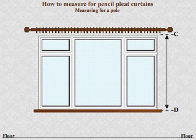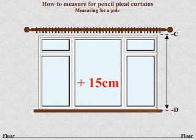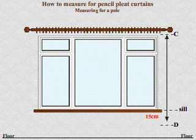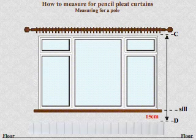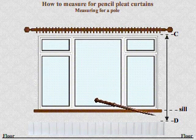Below the sill: measure to the sill and then add 15 centimetres. If there is a radiator within 15 centimetres below the sill, then measure to the radiator and deduct 1 centimetre.